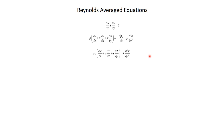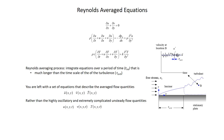In order to actually solve these equations we have to come up with a model for these additional terms — that's called the turbulent closure problem. We get simpler, much more computationally tractable equations, but they can't be solved unless you have a model for how turbulent fluctuations across all time and length scales impact the time-averaged characteristics of the flow.